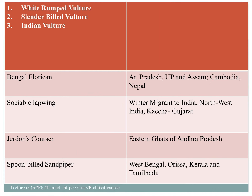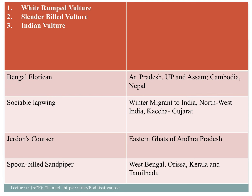Three vulture species are critically endangered: white-rumped vultures, slender-billed vultures, and Indian vultures. Bengal Florican is found in UP, Assam, Cambodia, and Nepal. It is known for its dancing display.